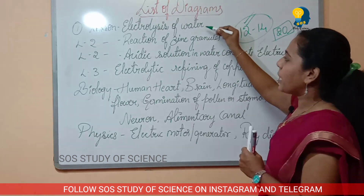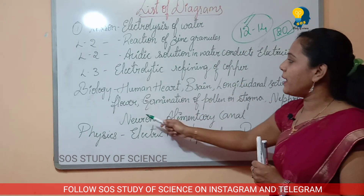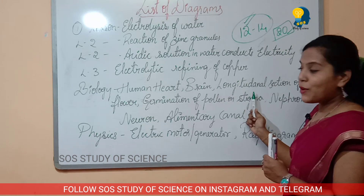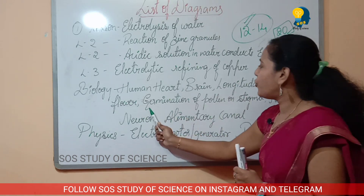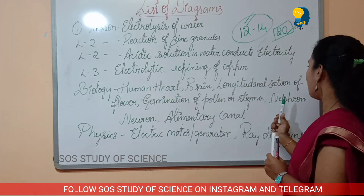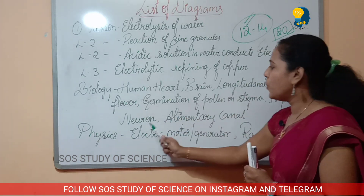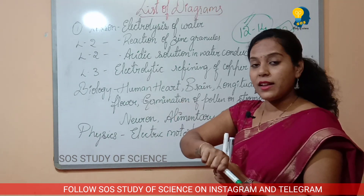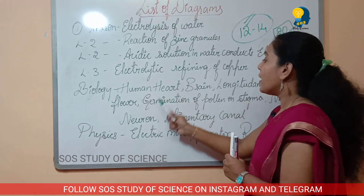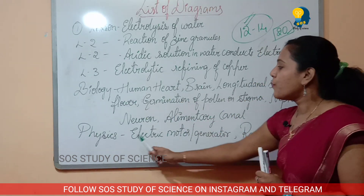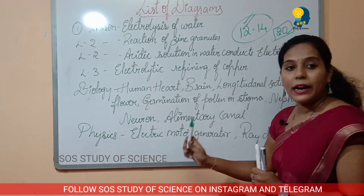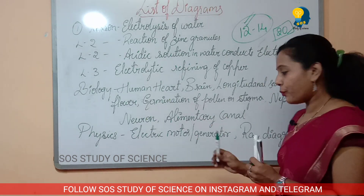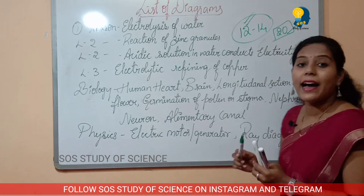In chemistry, there are four diagrams. For biology: heart, brain, flower, germination of pollen tube on stigma, nephron, neuron, and digestive system — these diagrams are called biology diagrams. For physics: electric motor and electric generator. And also ray diagrams.